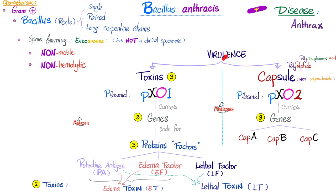The disease is anthrax. Virulence factors of Bacillus anthracis include toxins and the capsule. Let's talk about the toxins. We're talking plasmid PXO1. This plasmid carries a gene — because plasmid is a piece of nucleic acid, it can carry genes that code for proteins via transcription and translation. What kind of proteins? We're talking about three factors: protective antigen, edema factor, and lethal factor.